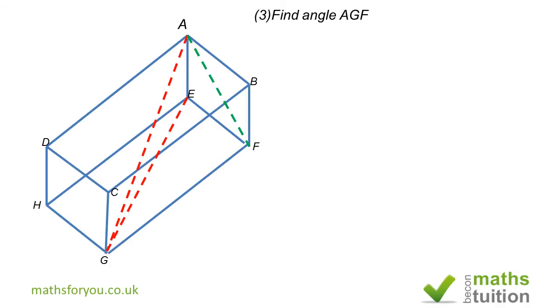So AF, again using Pythagoras, AF will be the square root of AB squared plus BF squared. That in effect means the square root of 3 squared plus 2 squared. 3 squared is 9, 2 squared is 4, 9 plus 4 is 13. The square root of 13 is 3.606, as we got here.